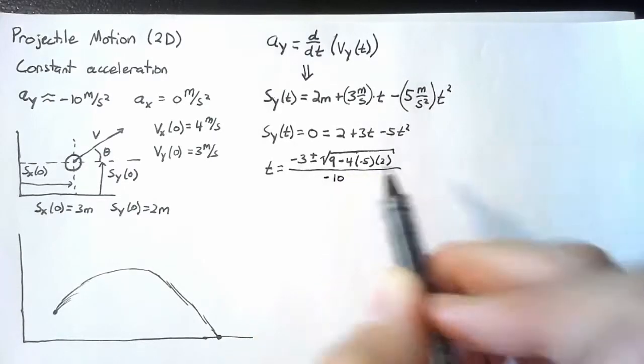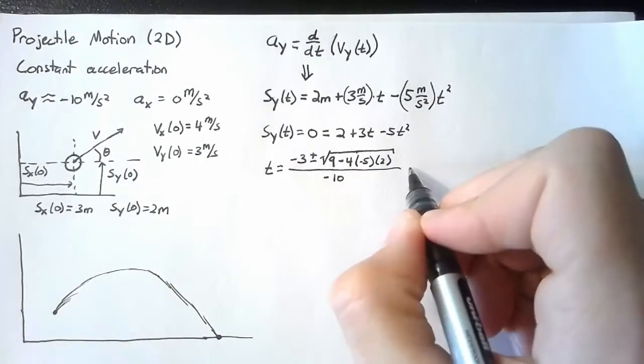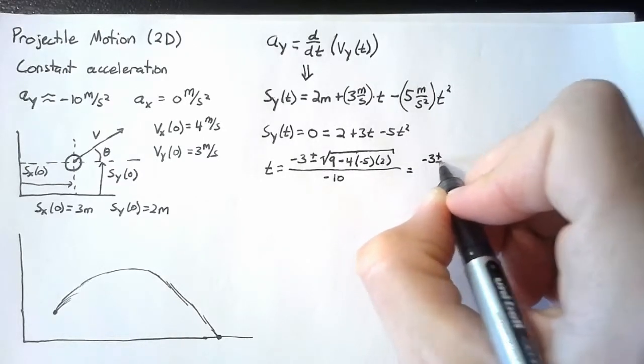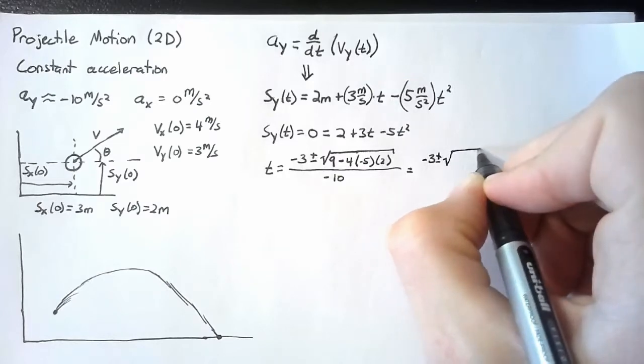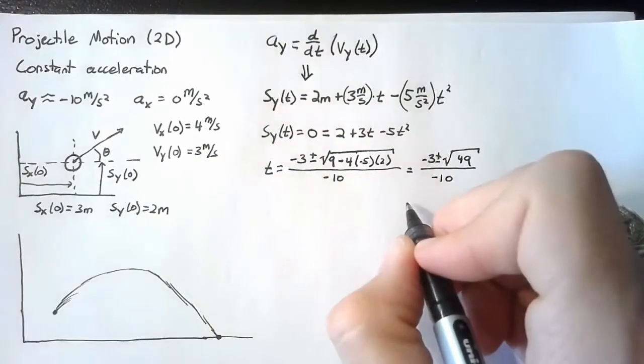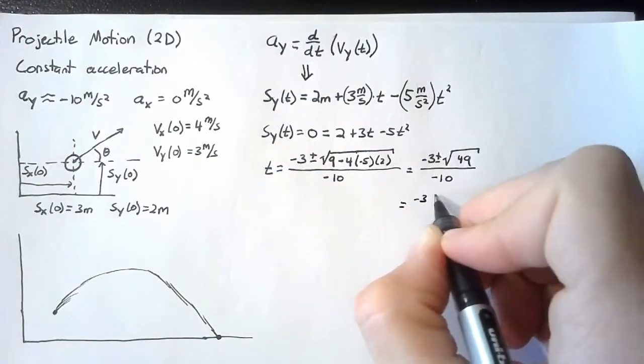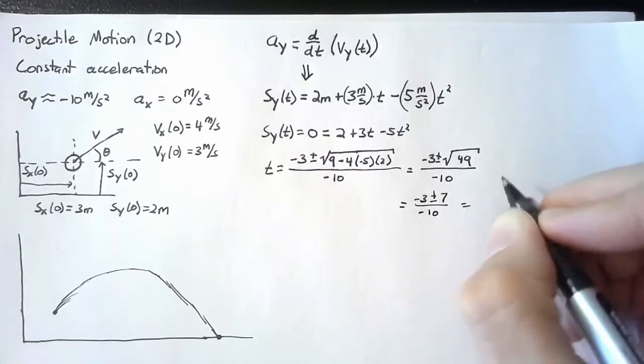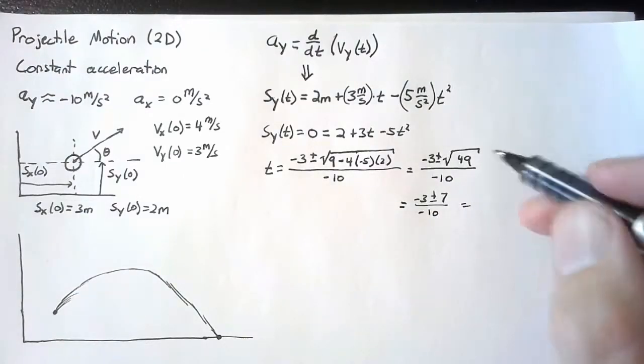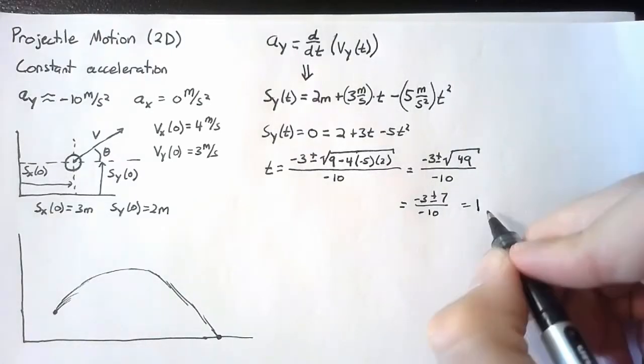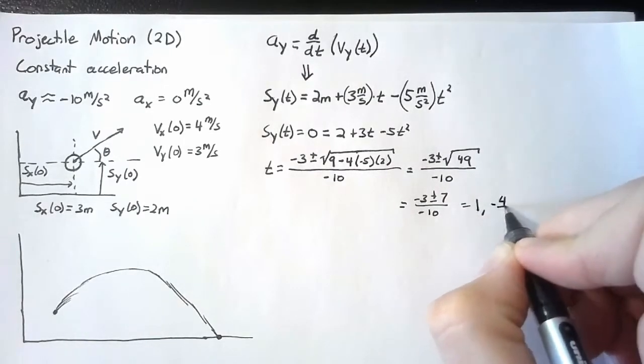So this is going to be negative 10. This becomes negative 3 plus or minus the square root of 49 divided by negative 10. Or negative 3 plus or minus 7 all over negative 10. So this becomes either negative 10 divided by 10, which is 1, or a negative 4 tenths.